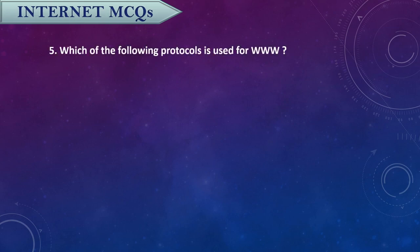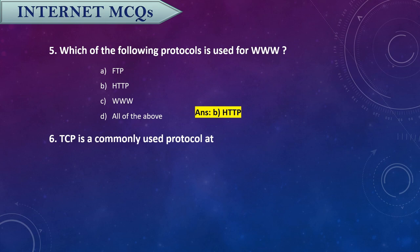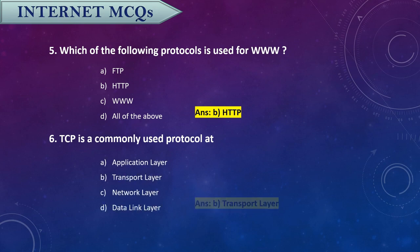Question five: Which of the following protocols is used for WWW? It's HTTP — the protocol used for WWW is HTTP. Question six: TCP is a commonly used protocol at which layer? The answer is the transport layer.